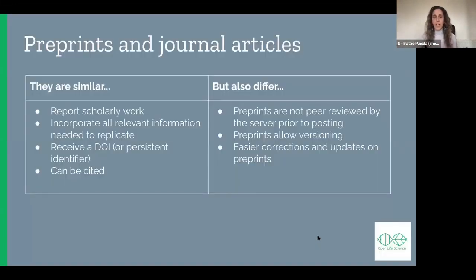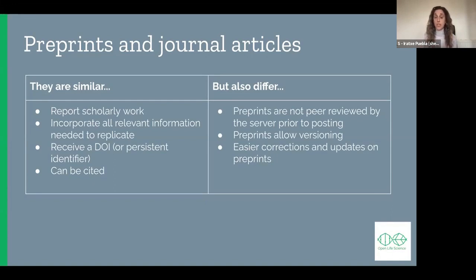There are elements in that definition that may sound very familiar to how we publish articles in journals. Both articles and preprints report scholarly work, and generally a preprint is the full paper with all the information about the study that allows others to replicate it, appraise it, and provide comments. Preprints are generally assigned a DOI so they can be traced, found, and cited.